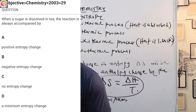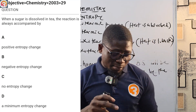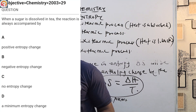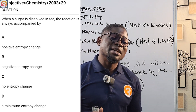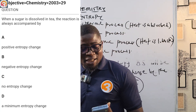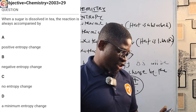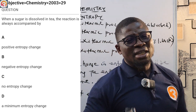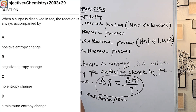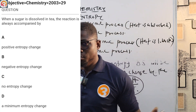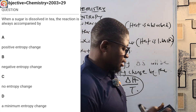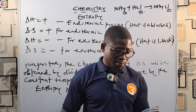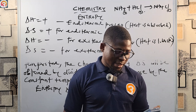The 2003 question 29: when sugar is dissolved in tea, the reaction is always accompanied by: A — positive entropy change, B — negative entropy change, C — no entropy change, D — minimum entropy change. The answer is positive entropy change, because when sugar is put into the tea it dissolves — the particles separate and become more random. So it leads to a positive entropy change.